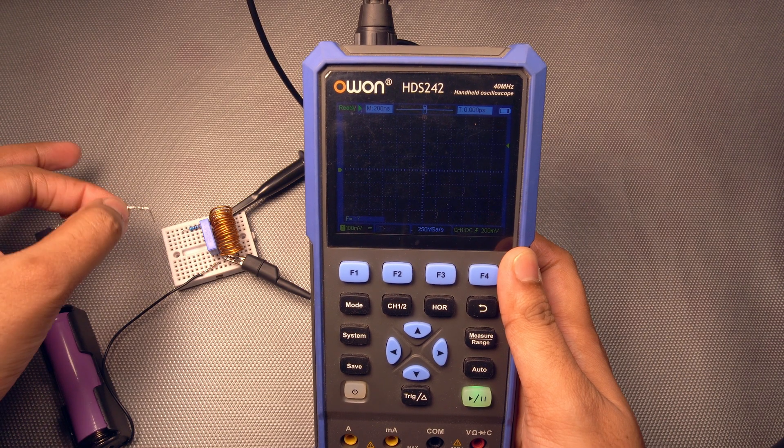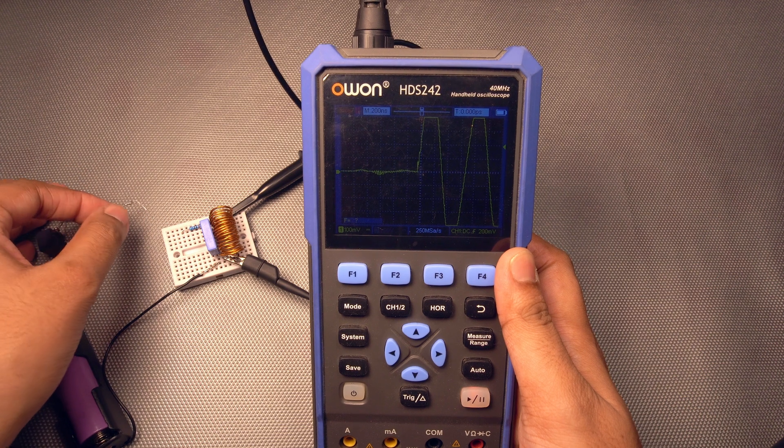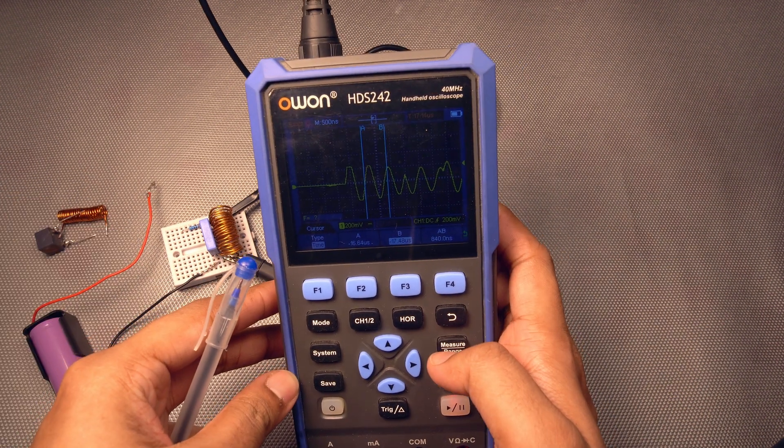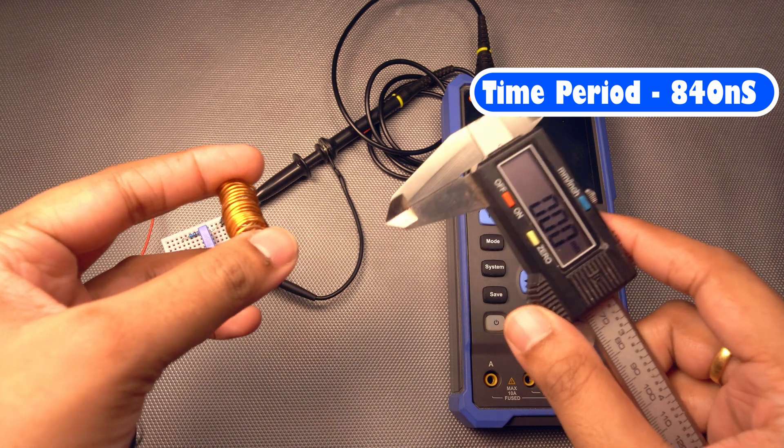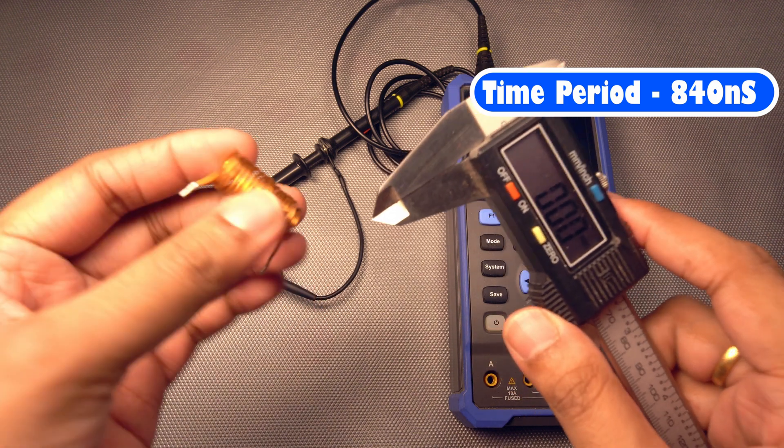Now let us check out some other values also. Now let's try this coil. Okay, so the value is 840 nanoseconds.